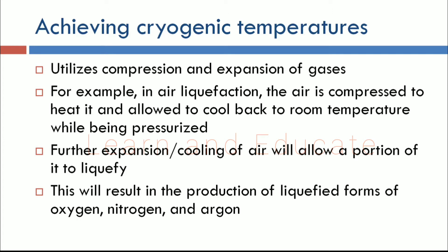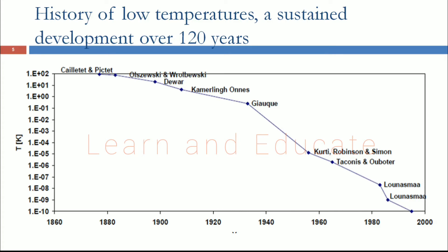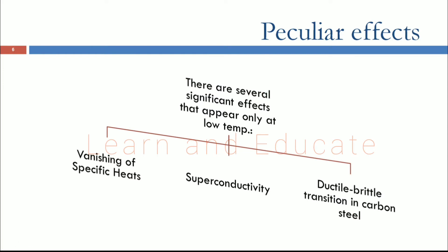The history of low temperatures represents a sustained development of over 120 years — it was not instantaneous. From around 1860, there were major breakthroughs: development of the Dewar flask, then Kamerlingh Onnes invented superconductivity, then work by Glaque, Robinson, and Simon on coolers. Finally, in the 1990s we could reach liquid helium temperature.